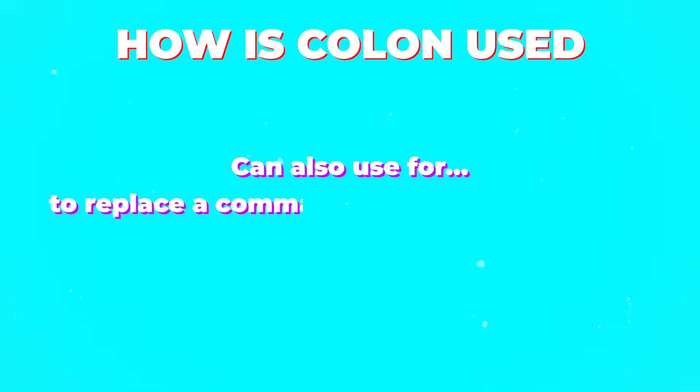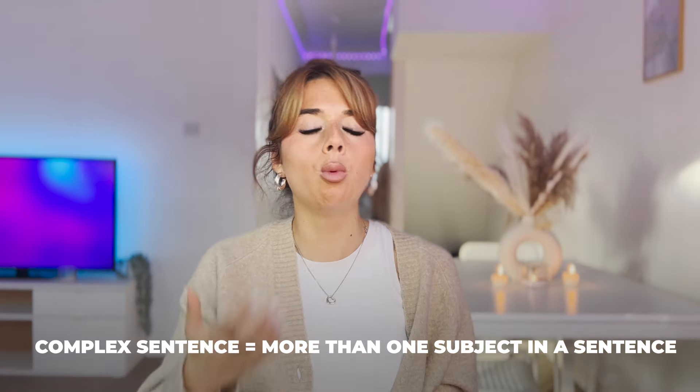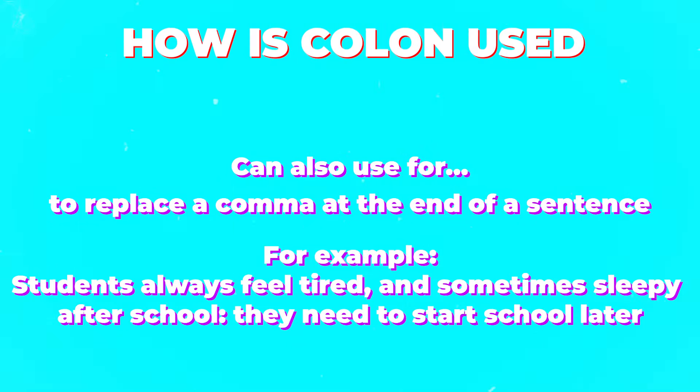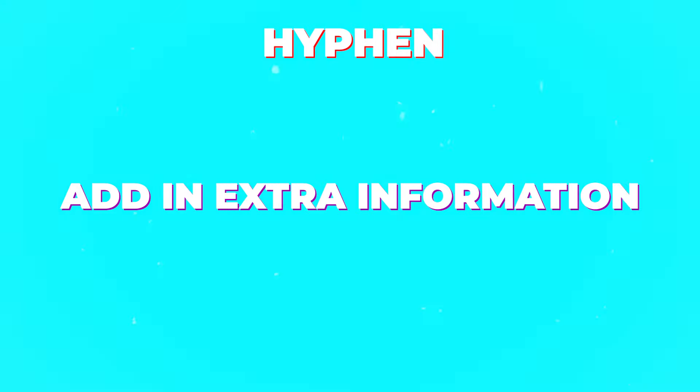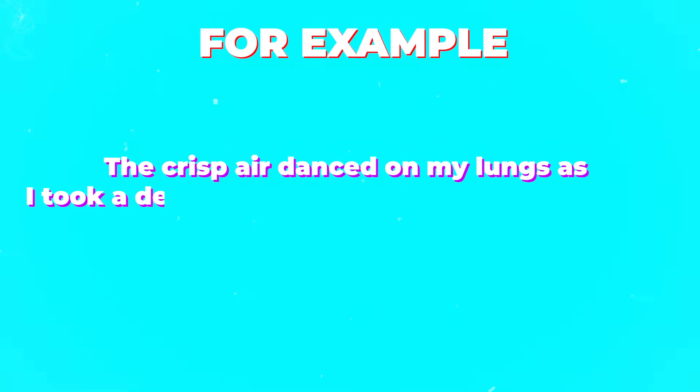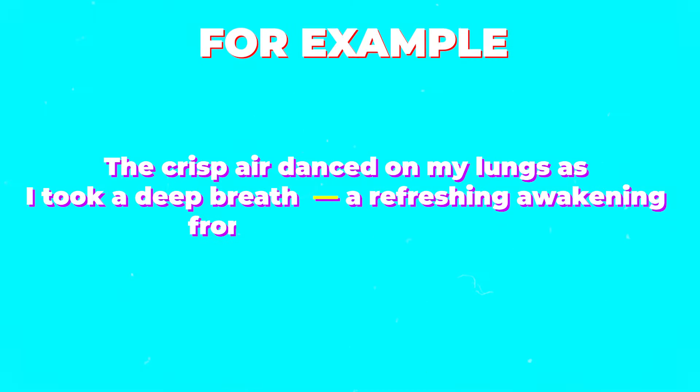A colon is most commonly used for a list — for example: 'I went to the shop and bought: eggs, flour, spinach.' You can also use a colon instead of a comma at the end of a complex sentence. A hyphen or dash adds extra information — almost bolting on detail that doesn't need to be in the main sentence. For example: 'The crisp air danced on my lungs as I took a deep breath — a refreshing awakening from nature around me.'